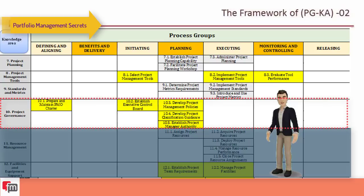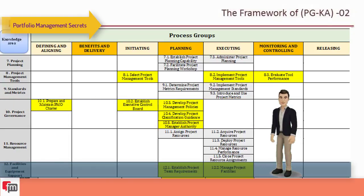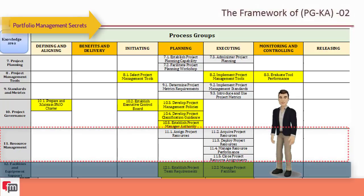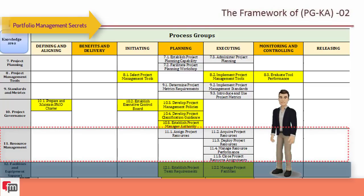Knowledge area eleven is resource management, with five processes: acquire project resources, assign project resources, deploy project resources, manage resource performance, and close project resource assignment.